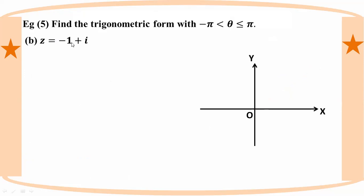Number 2: z equal to minus 1 plus i. The coordinate point is (-1, 1). This point lies in the second quadrant.